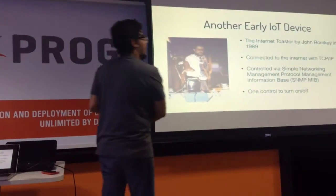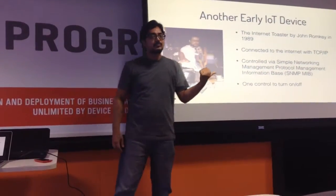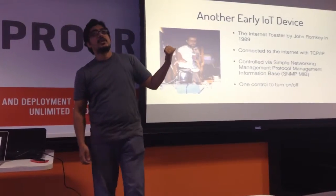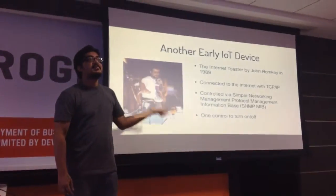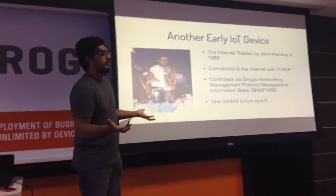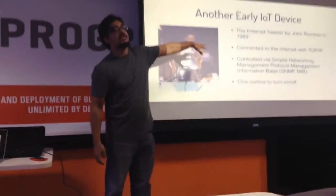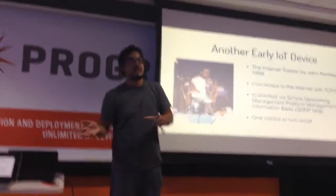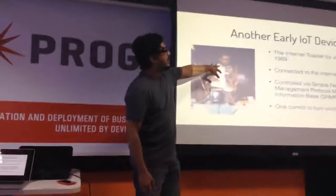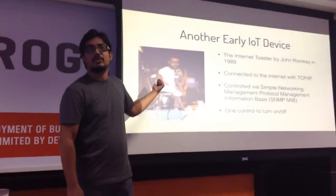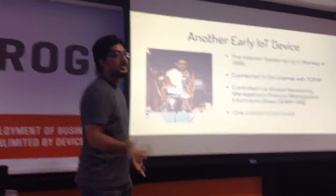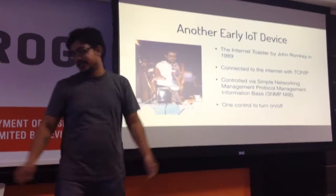The next device which happened was around 1989. This guy's name is John Romkey. What he did was he took a toaster and made it connected to the internet. Even at this time the first web page was not even created. He connected it to TCP/IP and wrote something called SNMB and MIB to turn the toaster on and off. Of course, you still need somebody to put the bread in, but still it's an internet device.